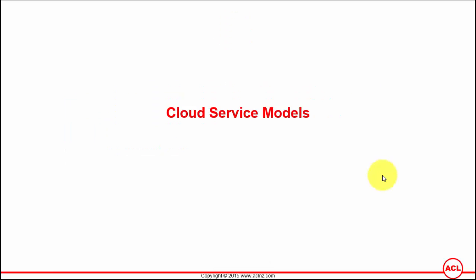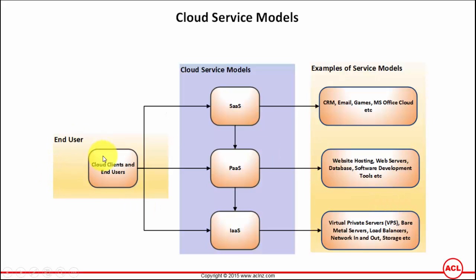Cloud vendors sell their cloud services using different models, referred to by several different acronyms. It's very important to understand those acronyms, which are called cloud service models. As an end user, you don't really see what's going on in the cloud — you access your cloud services via a browser or console. The cloud services model is divided into three areas, starting with the SaaS model.